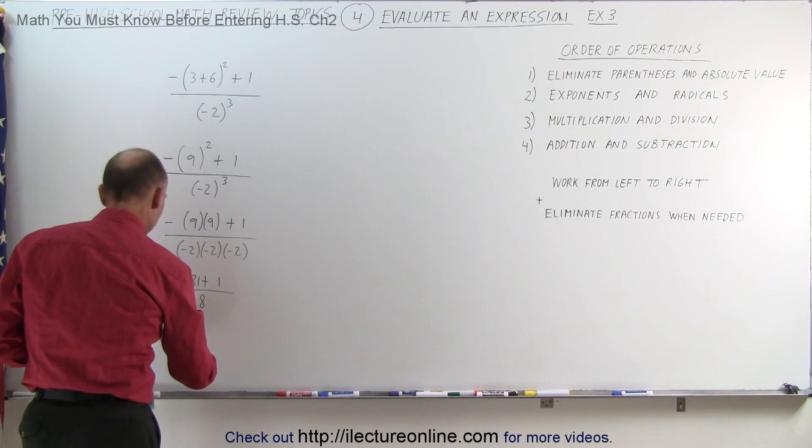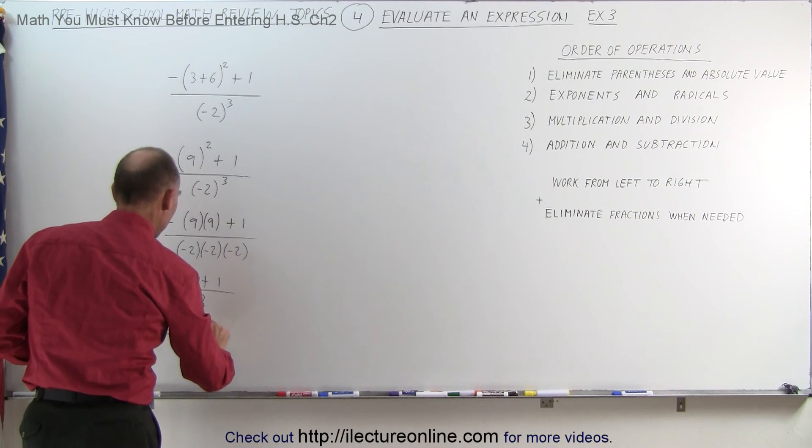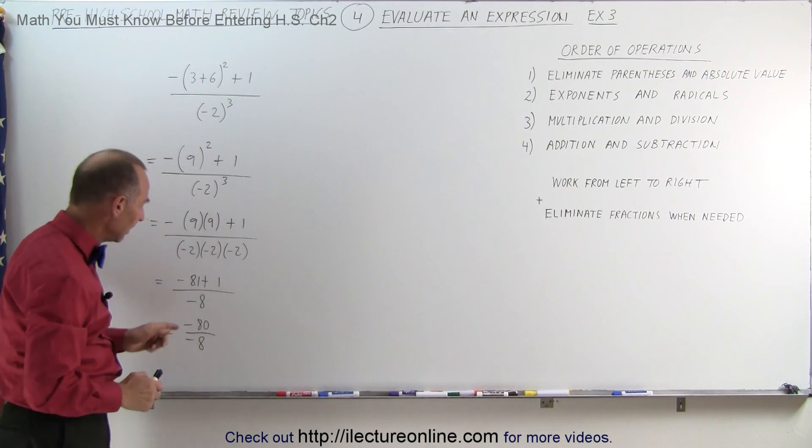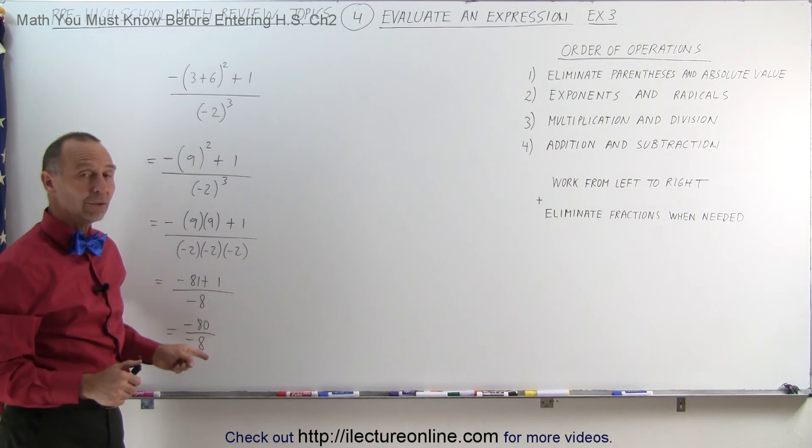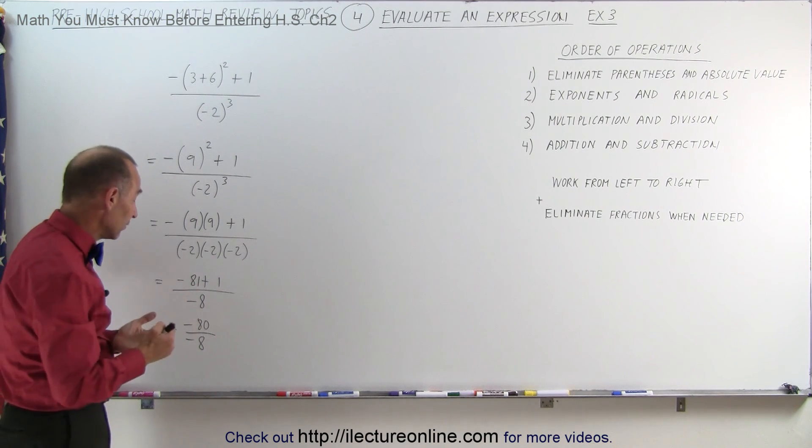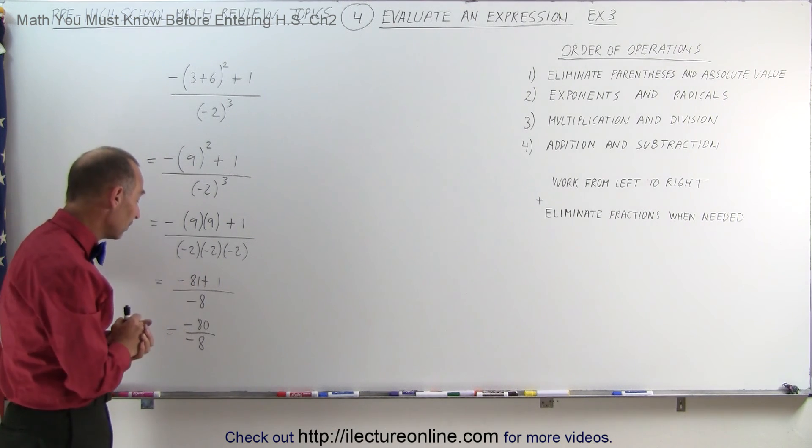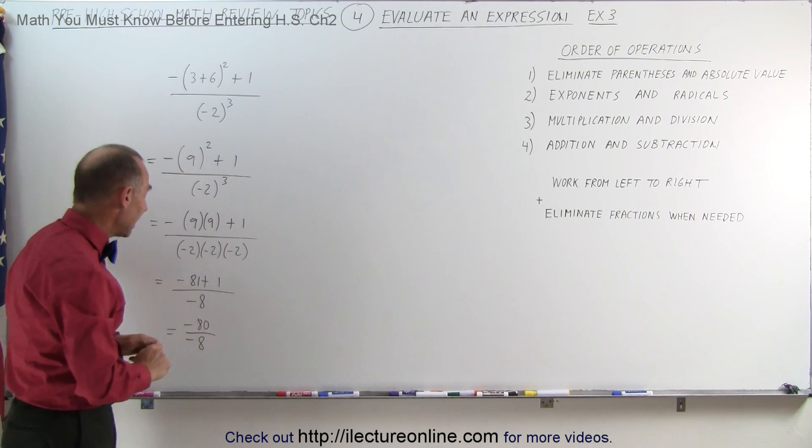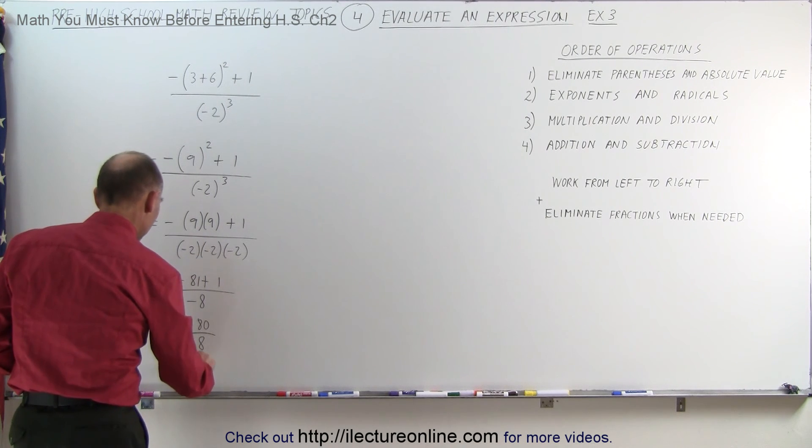Combining the numerator, this is equal to minus 81 plus 1, which is minus 80, divided by minus 8. So here we are dividing a negative number by a negative number. Again, that's an even number of negative numbers, so the negatives cancel out. And 80 divided by 8 is 10, so the answer here is 10.